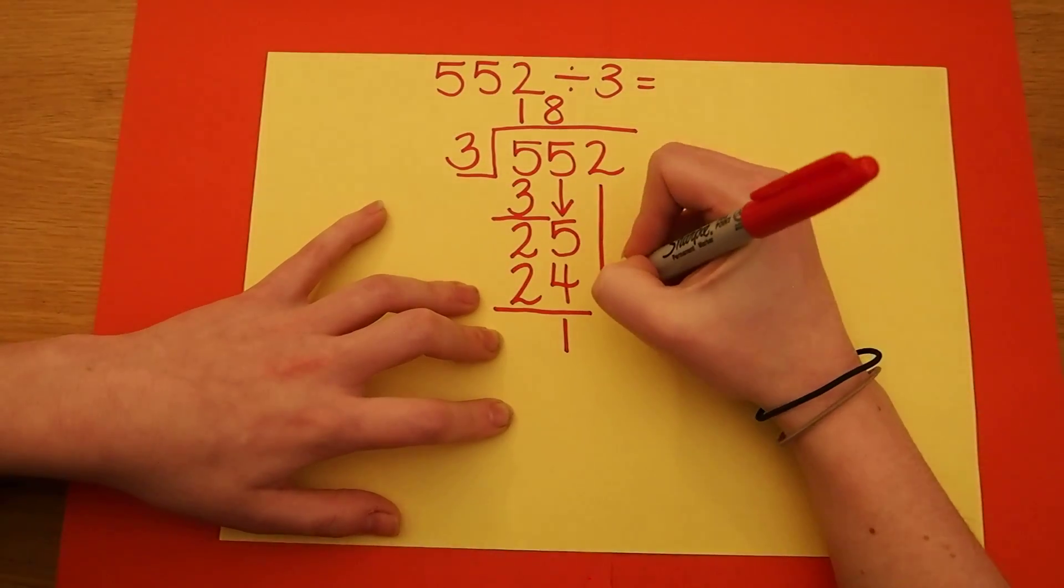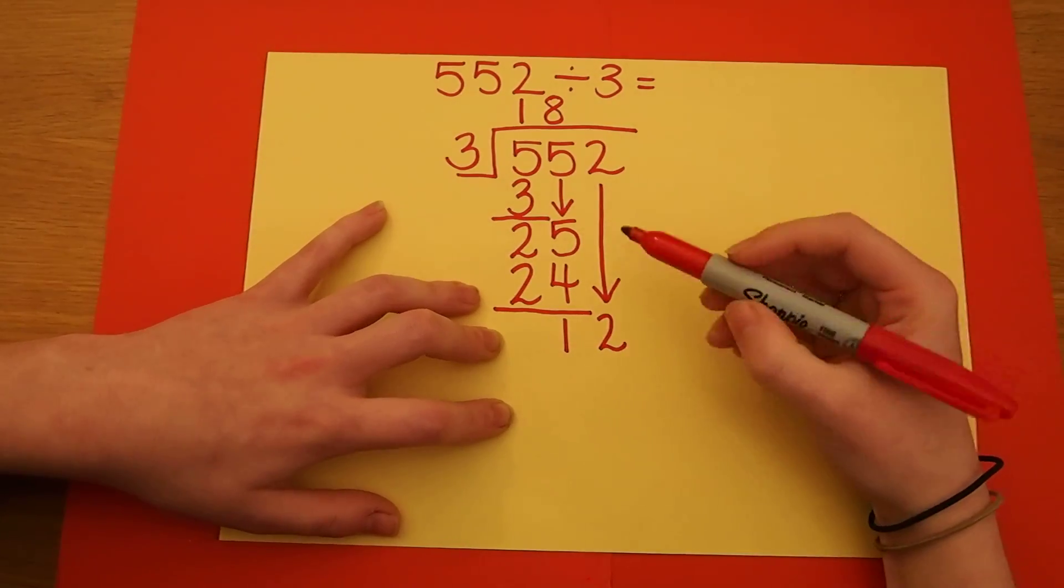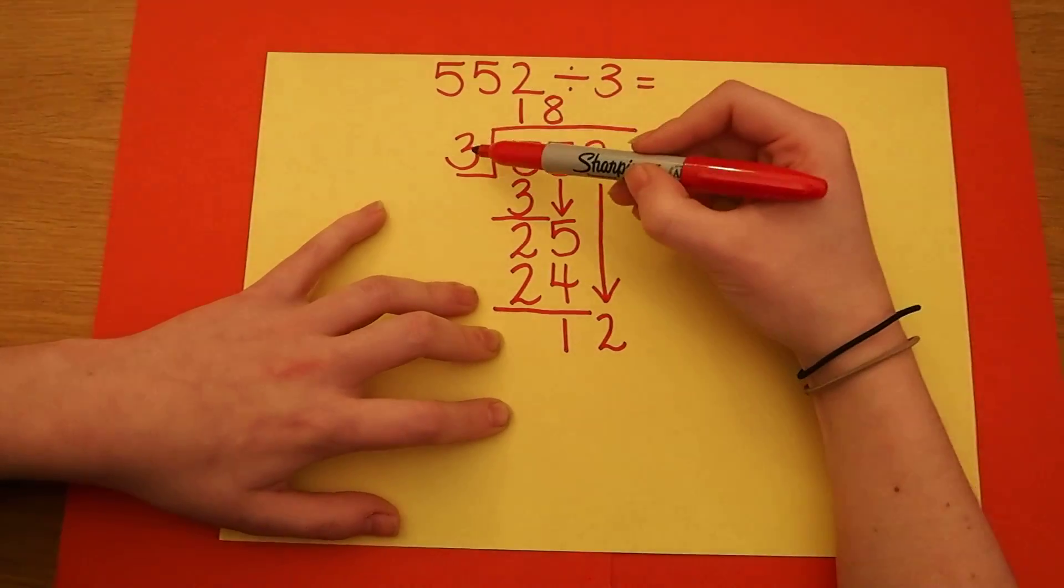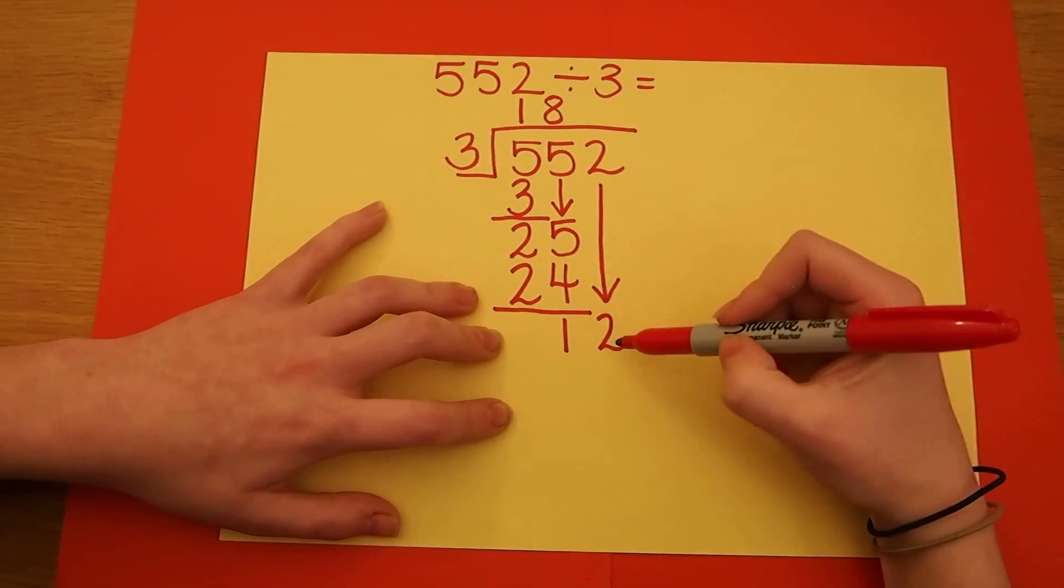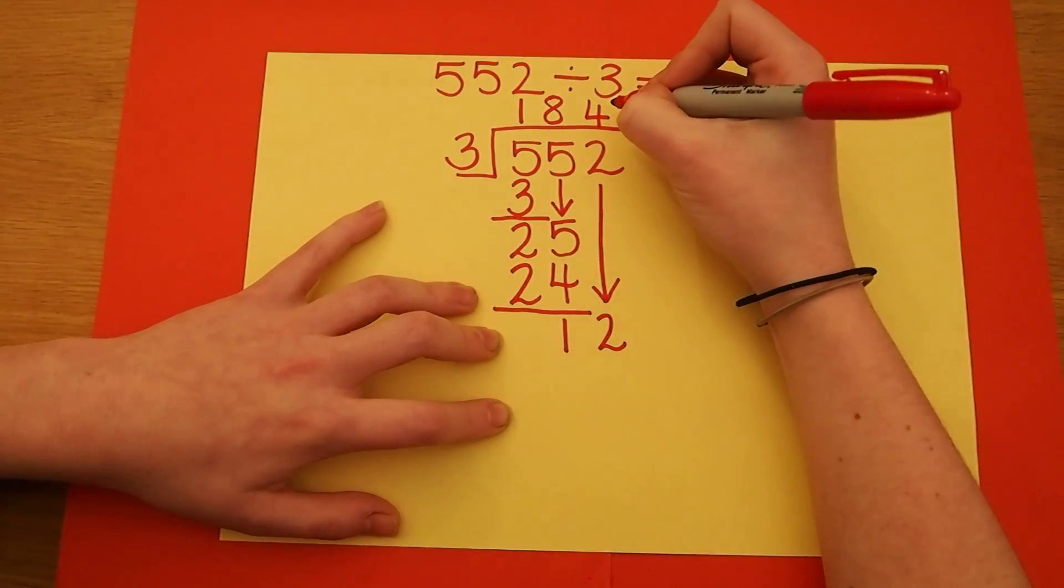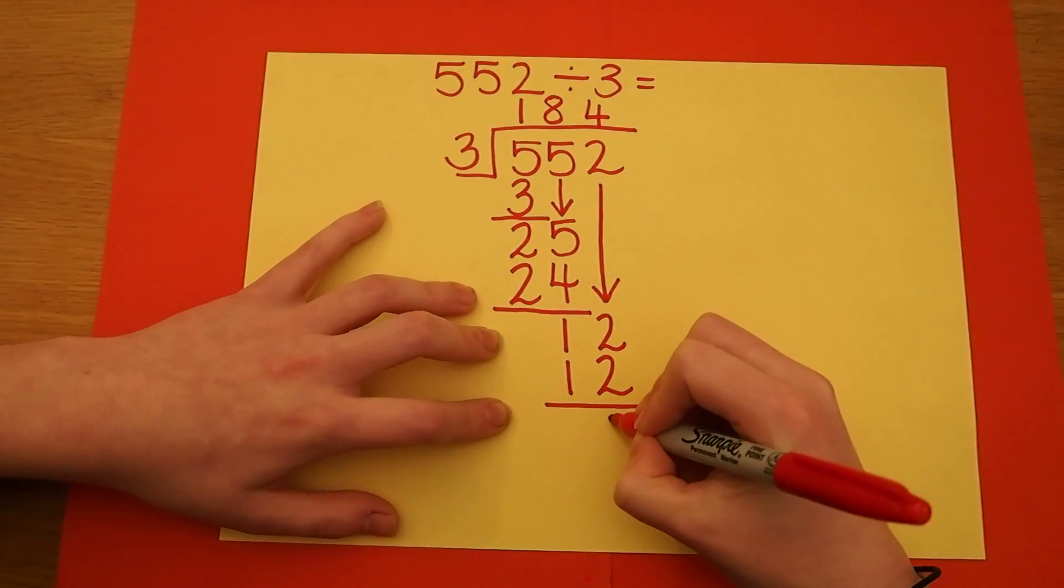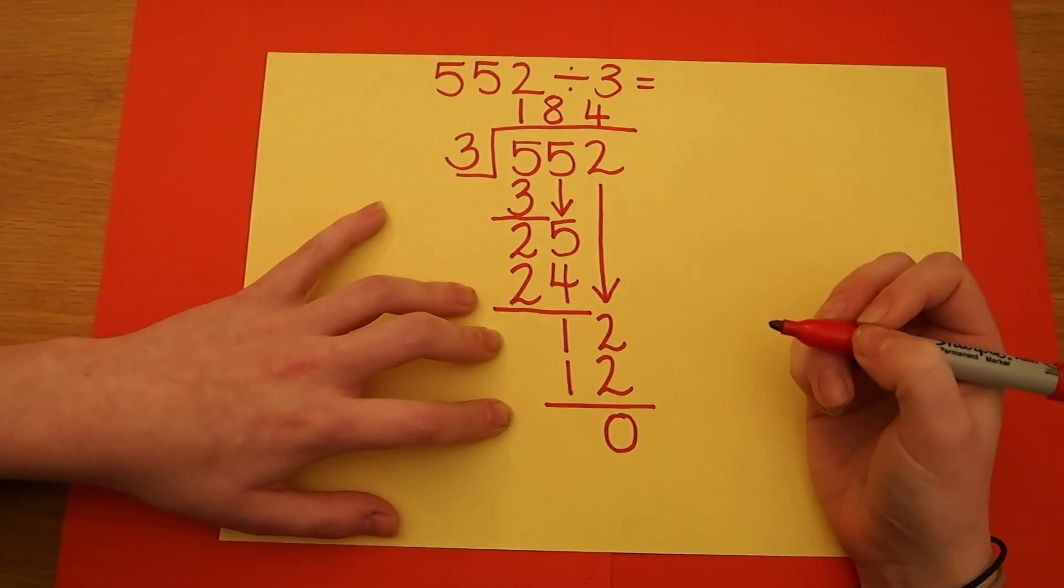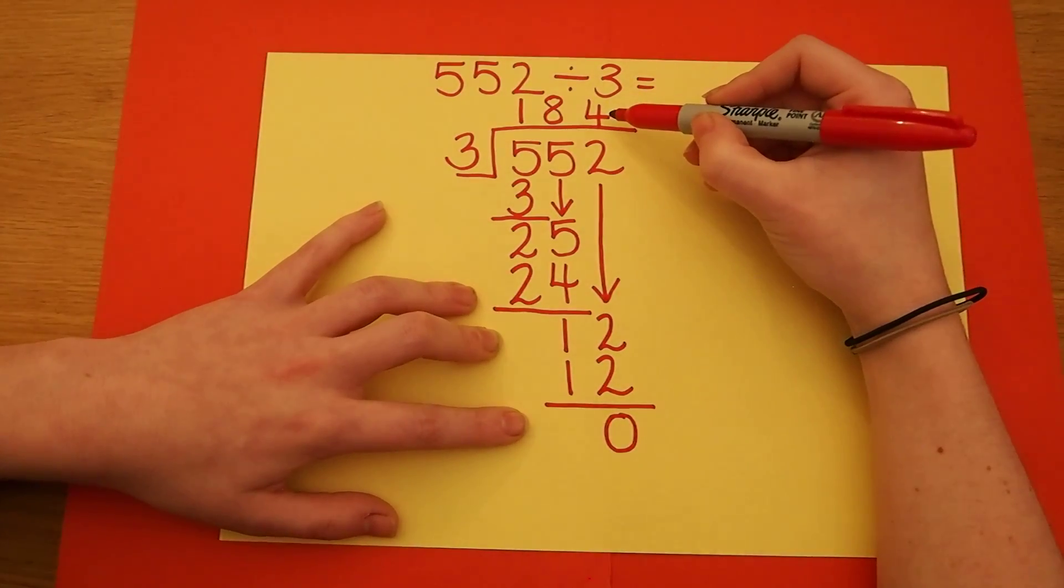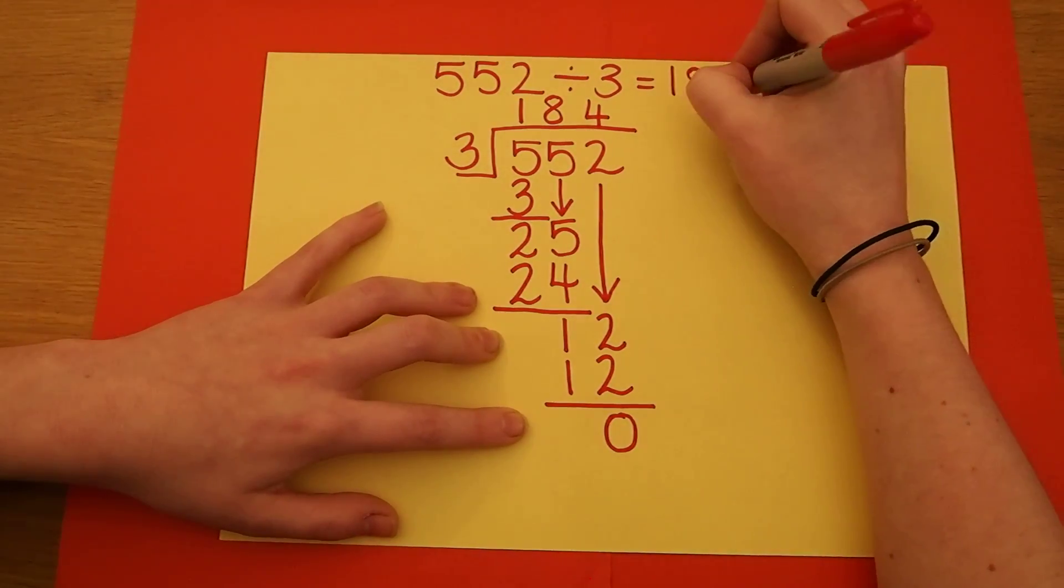I bring the 2 down. Now I make the number 12, and I need to think how many 3's make 12. 4 times 3 makes 12, and when I take that away, I get left with no remainder. So the answer to 552 divided by 3 is 184.